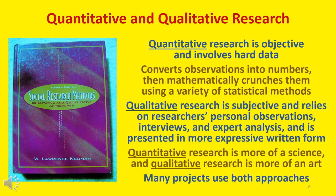Quantitative research is objective and involves hard data. It converts observations into numbers and then mathematically crunches them using a variety of statistical methods. Qualitative research is subjective; it relies on the researcher's personal observations, interviews, and expert analysis, and is presented in a more expressive written form. It also allows for multiple viewpoints and a multicultural perspective. Broadly speaking, quantitative research is more of a science and qualitative research is more of an art. Many research projects utilize both approaches to study various aspects of a particular problem.